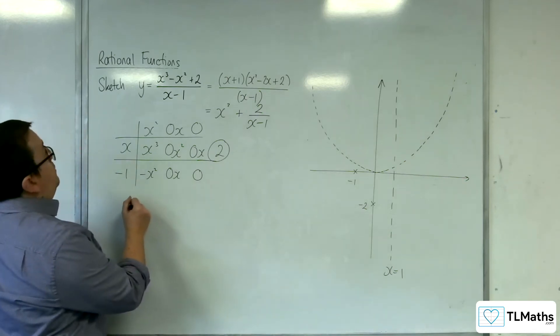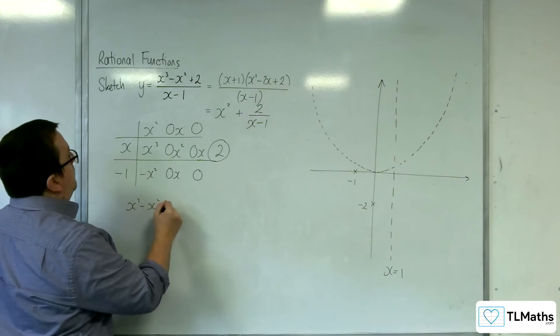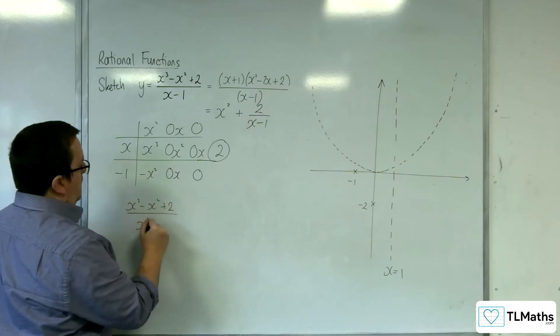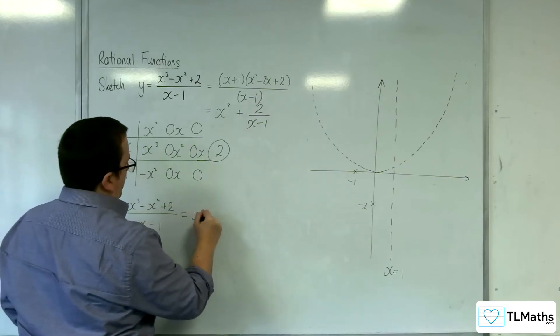Now, to do that, I'm going to put the x cubed take away x squared plus 2 over x take away 1 equal to y equals x squared, so x squared.